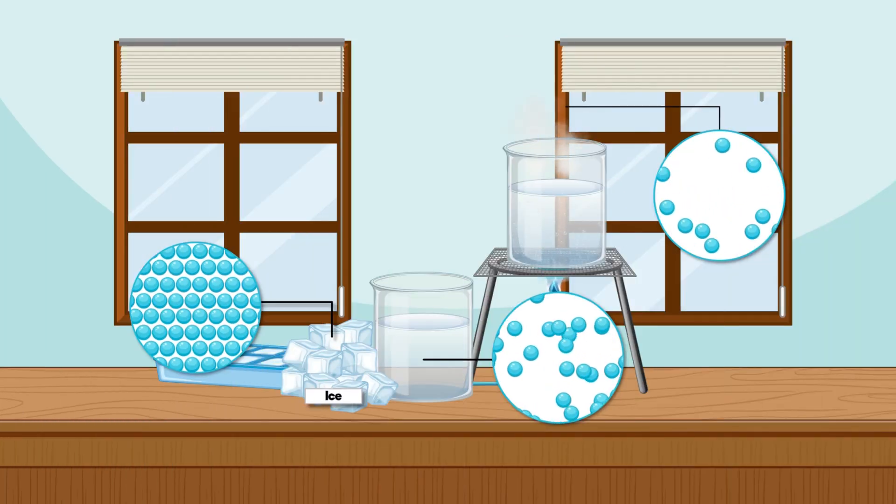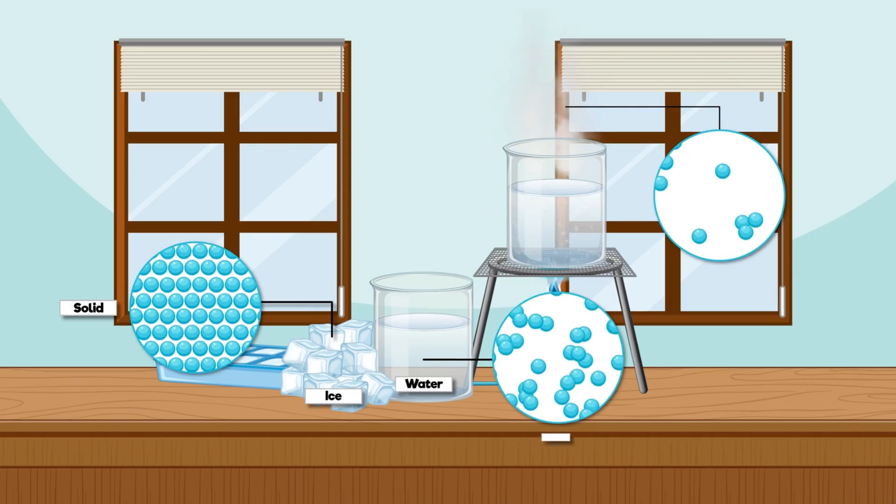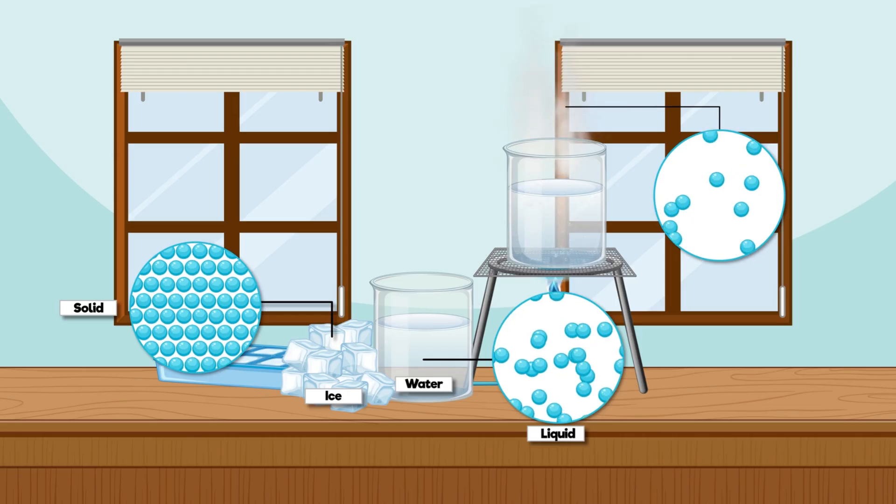All matter is made of tiny particles. These particles can be atoms, the smallest building blocks of matter, or molecules, which are groups of atoms joined together. The way particles are arranged is called structure, and that structure determines the volume, or how much space the matter takes up.